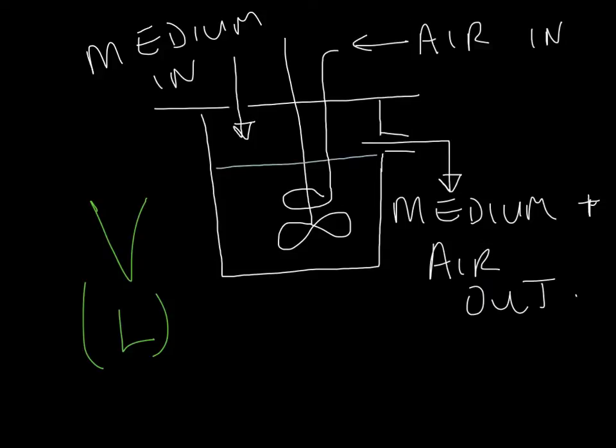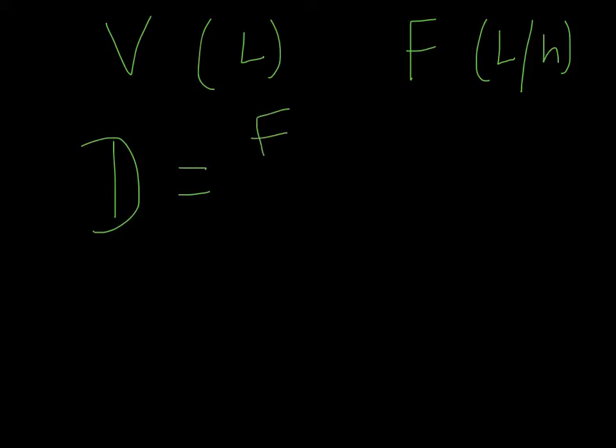Now, the rate that medium exits - important, not enters - exits the vessel is F, and F is measured in litres per hour or litres per minute. What can we do with those values? Well, we can start with some very basic calculations. We've got volume V in litres and we've got our flow rate which we'll put in litres per hour. In reality you probably measure it in mils per minute and then multiply it back up. From these two we can calculate a very useful parameter, D, which equals F over V.